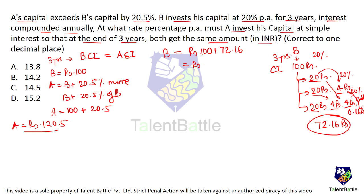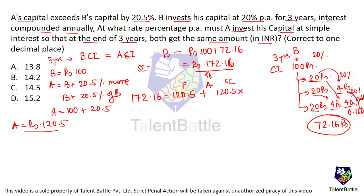This amount of 172.16 rupees has to be received by A after 3 years as per simple interest. So A is going to get 172.16 rupees. The amount is given by principal amount of A, which is 120.5, plus simple interest of A. The formula for simple interest is: SI = Principal × Time × Rate / 100. Time period is 3 years. The rate of interest we don't know. So 172.16 − 120.5 = 51.66, approximately 52.3, equals 120.5 × 3 × R / 100.